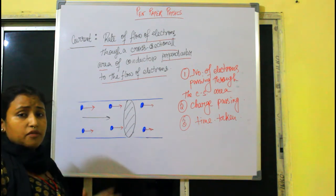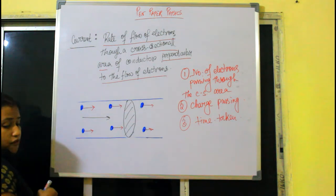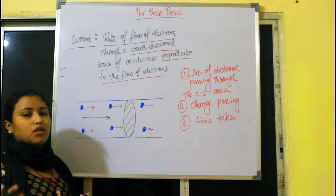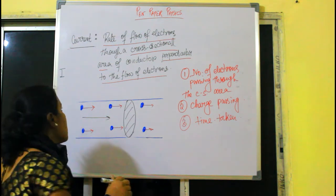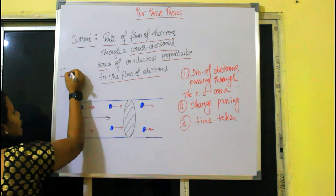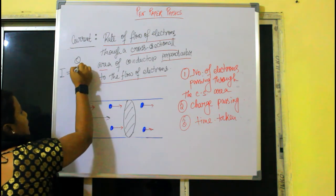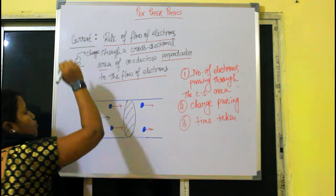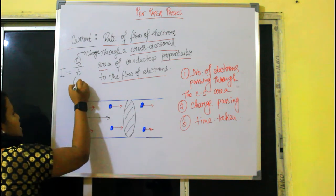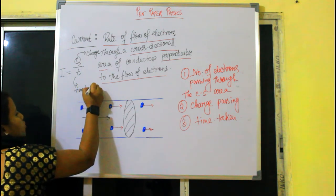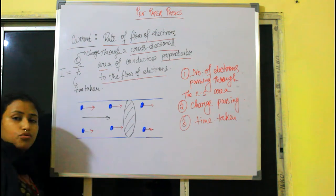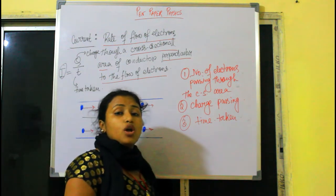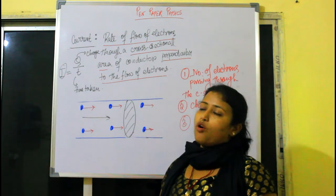The formula for current: in physics we use the letter I for current. So I = Q/T, where Q is the charge that passes through the cross-sectional area and T is the time taken for that amount of charge to pass through. So I equals Q divided by T — this is the formula.